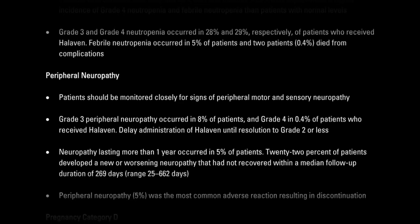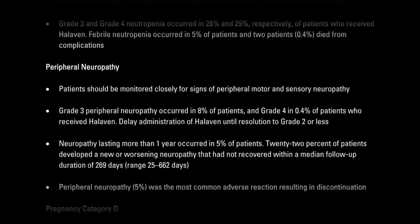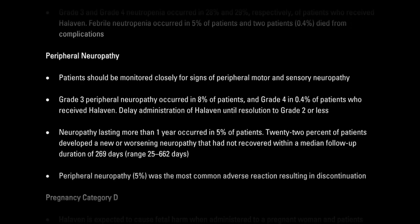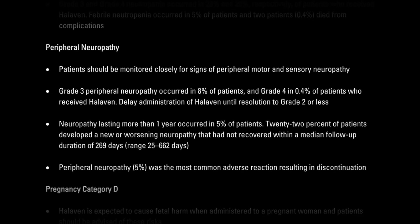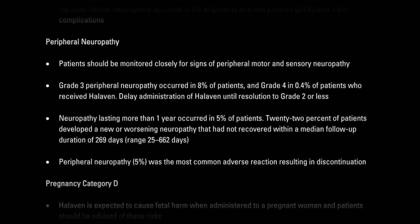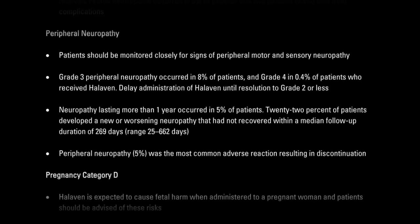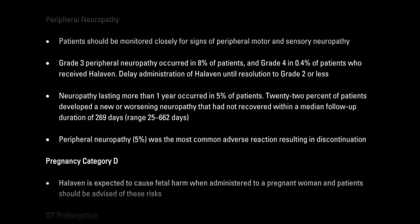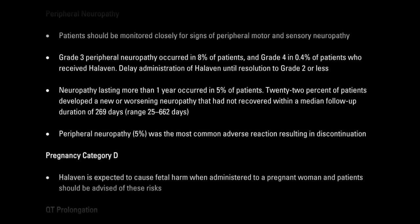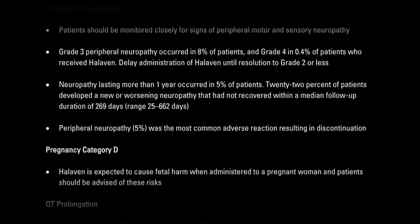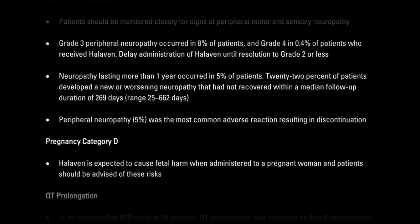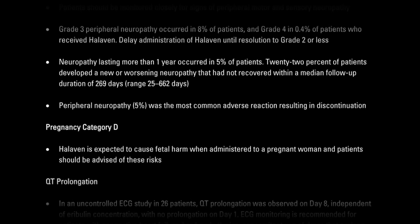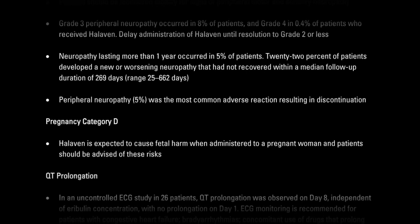Patients should also be monitored closely for signs of peripheral motor and sensory neuropathy. Grade 3 peripheral neuropathy occurred in 8% of patients, and grade 4 in 0.4% of patients who received Halaven. In any of these instances, delay administration of Halaven until a resolution to grade 2 or less. In 5% of patients, neuropathy lasted more than one year. 22% of patients developed a new or worsening neuropathy that had not recovered with an immediate follow-up duration of 269 days, a range of 25 to 662 days.